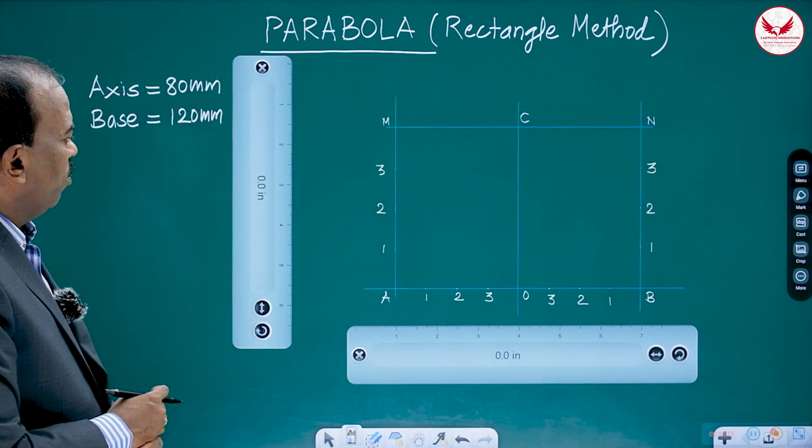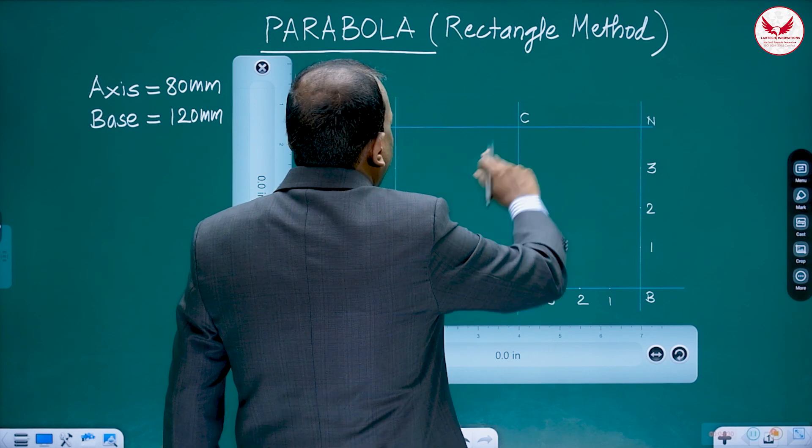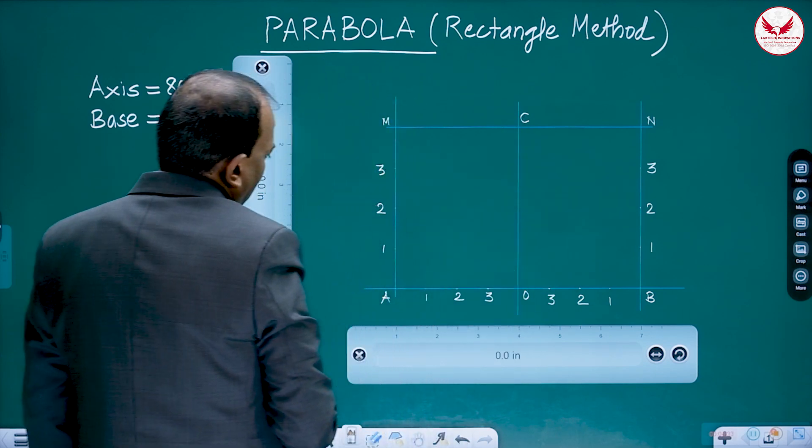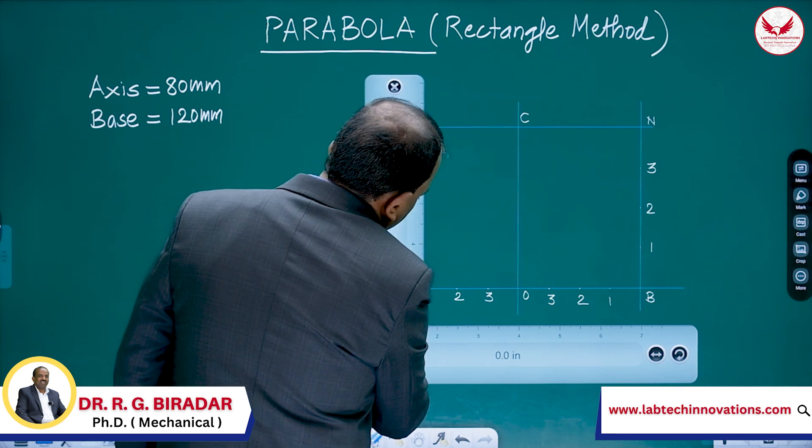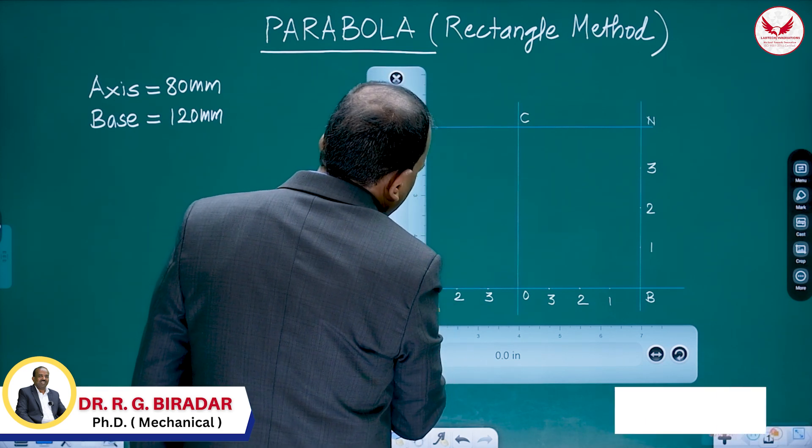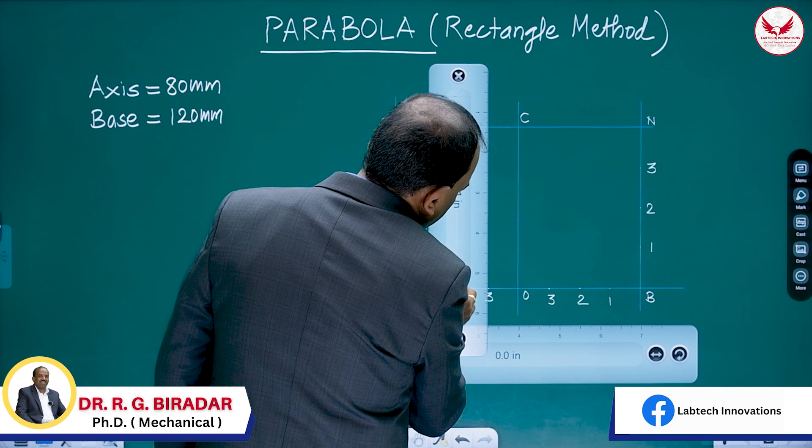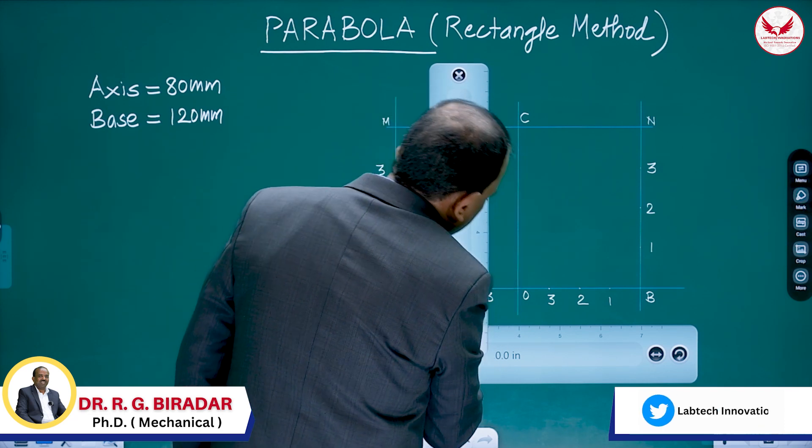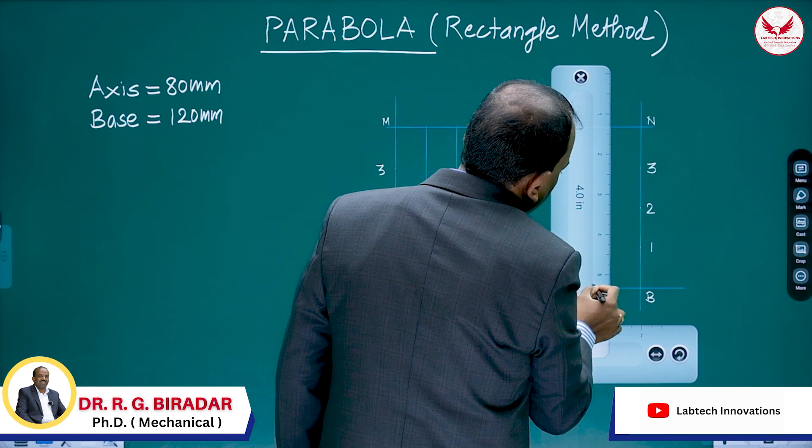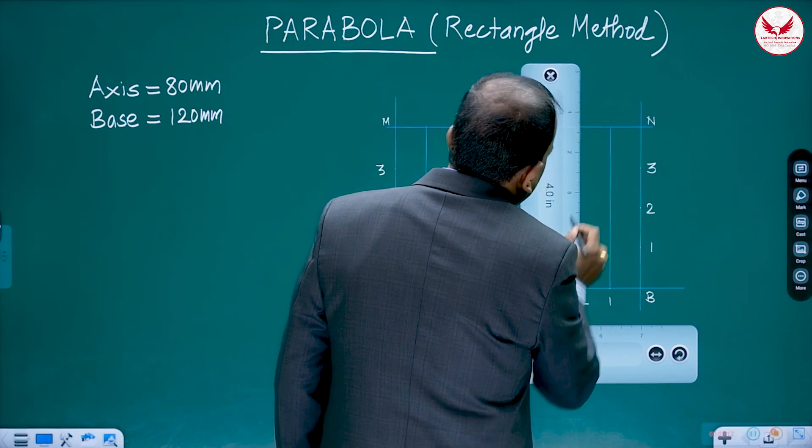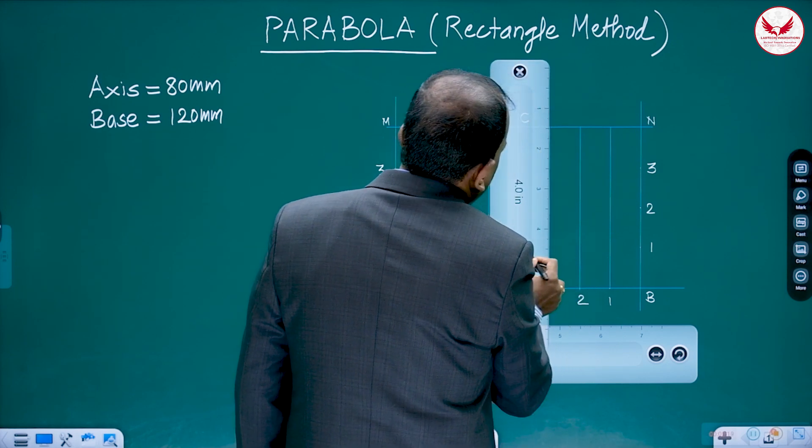Then, for getting the points on the parabola, what we have to do? Draw the vertical lines from these points on the base and join all these points to C from the vertical lines. Very light lines from 1, this is the vertical line. Then 2, it's vertical line. Then 3, it's vertical line. Similarly, 1, 2, and 3.